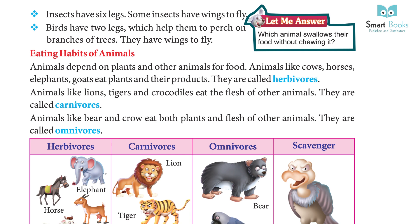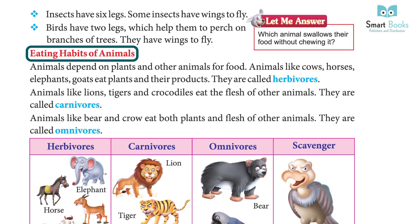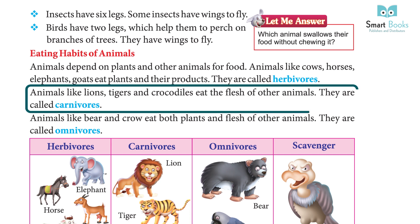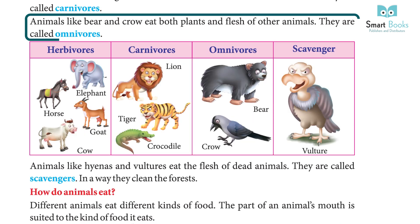Eating habits of animals: animals depend on plants and other animals for food. Animals like cows, horses, elephants, and goats eat plants and their products — they are called herbivores. Animals like lions, tigers, and crocodiles eat the flesh of other animals — they are called carnivores.